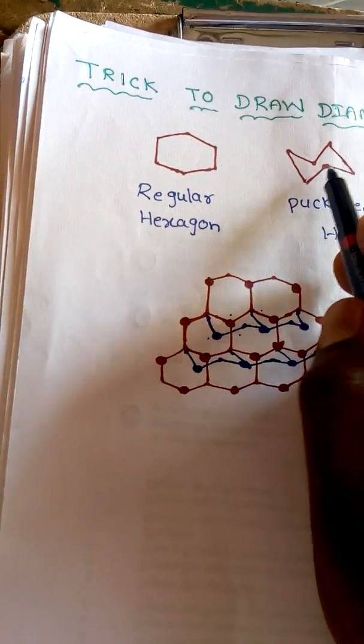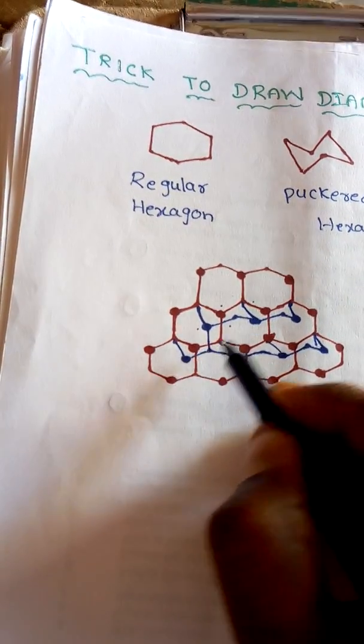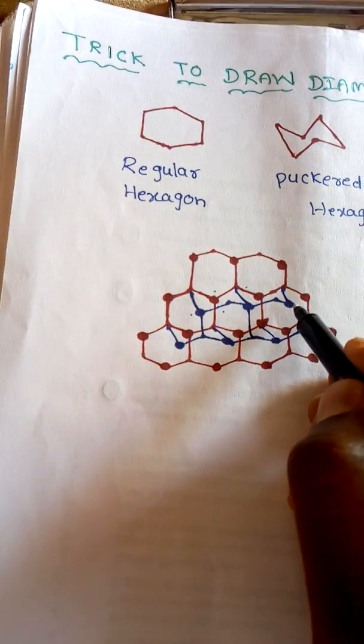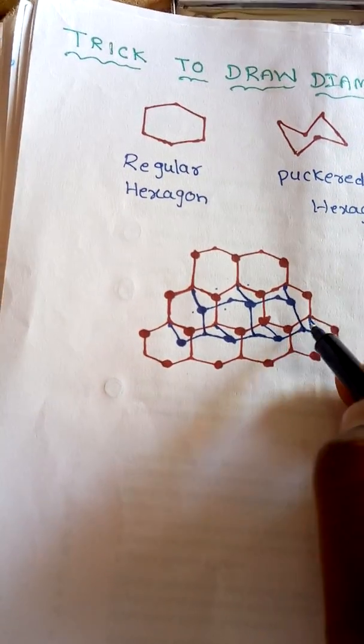Now we have to attach this lower position carbon to the another lower position carbon, that means this carbon like this and here we have to join this with this and this with this.